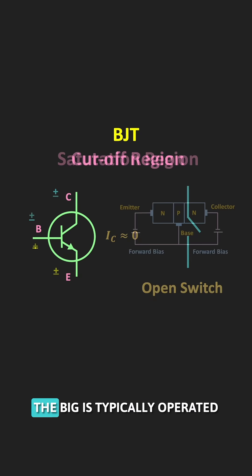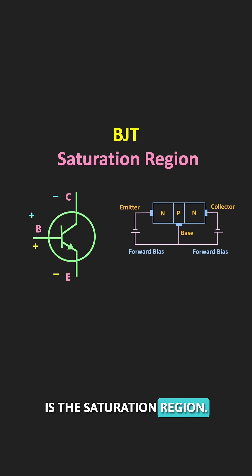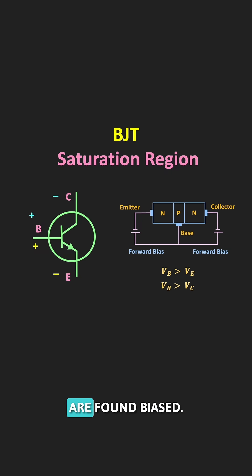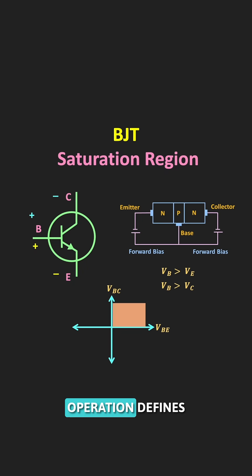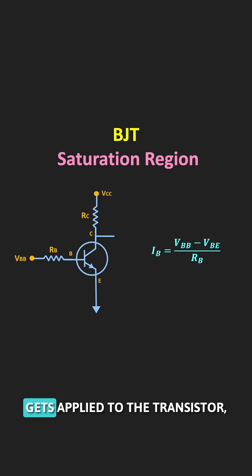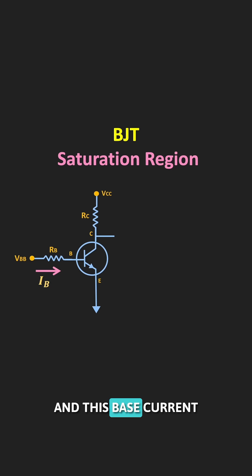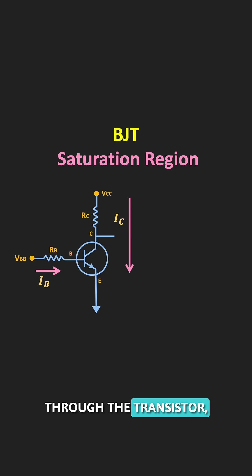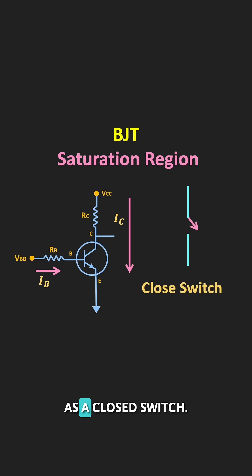The third region in which the BJT is typically operated is the saturation region. In this region, both the base-emitter junction and the collector-base junction are forward biased, which defines the saturation region. To operate the BJT in saturation, it is biased so that a large base current is applied to the transistor. This base current is enough to drive the collector current to its maximum value, and whenever this maximum collector current flows through the transistor, the value of VCE is very low. In this region, the transistor acts as a closed switch.